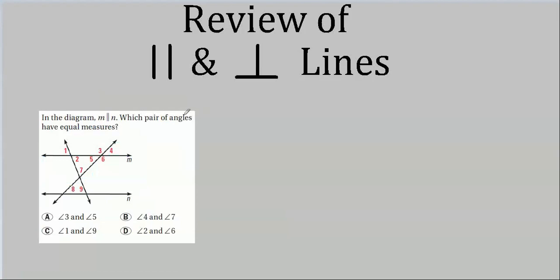This next problem looks complicated — we've got nearly a dozen angles to sort out. Rather than identifying every pair of congruent angles, let's look at the answer choices. Angles 3 and 5 are supplementary, not congruent. What about angles 4 and 7?